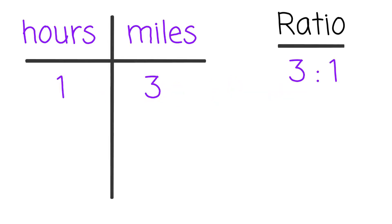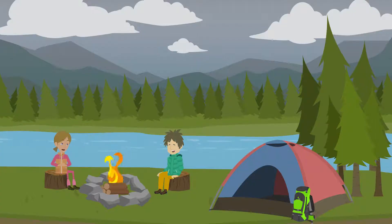Let's see, we are keeping a rate of 3 miles every hour. We have been hiking for 2 hours now, so that means we've gone 6 miles. If the entire trail is 9 miles long, how much longer should it take? If we keep the ratio the same, it should take a total of 3 hours to hike 9 miles. I'm glad we finally made it — this is a nice spot.